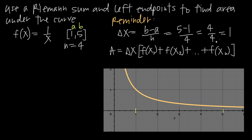We're supposed to divide this interval into four rectangles, and we used that information to find that delta x equals 1 — the width of each rectangle is 1. Our first rectangle starts at x = 1 and goes to x = 2, the second from 2 to 3, the third from 3 to 4, and the fourth from 4 to 5. This gives us four rectangles, which matches our value of n.